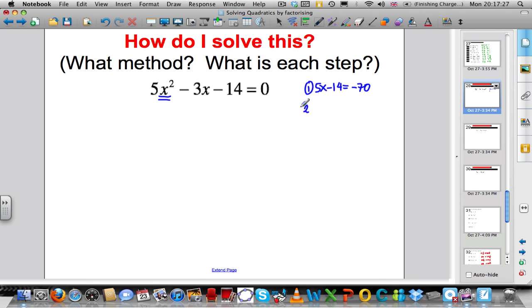You then ask yourself the question, what two numbers multiply to this minus 70 and add up to minus 3? Can you think of two numbers? Well, negative 10 and positive 7 multiply to minus 70 and add to minus 3.